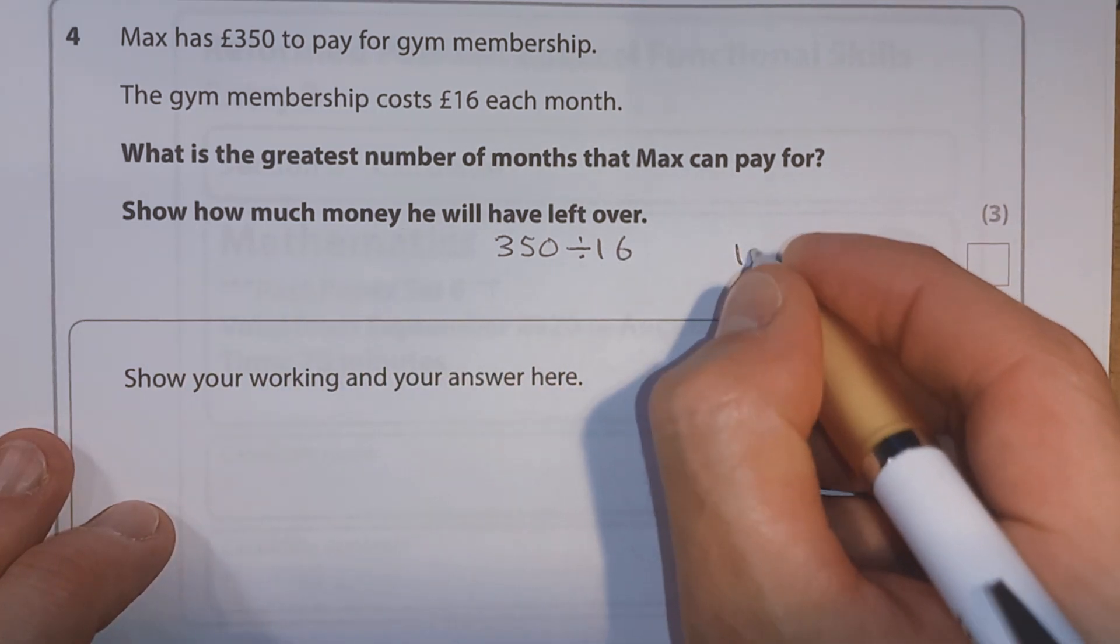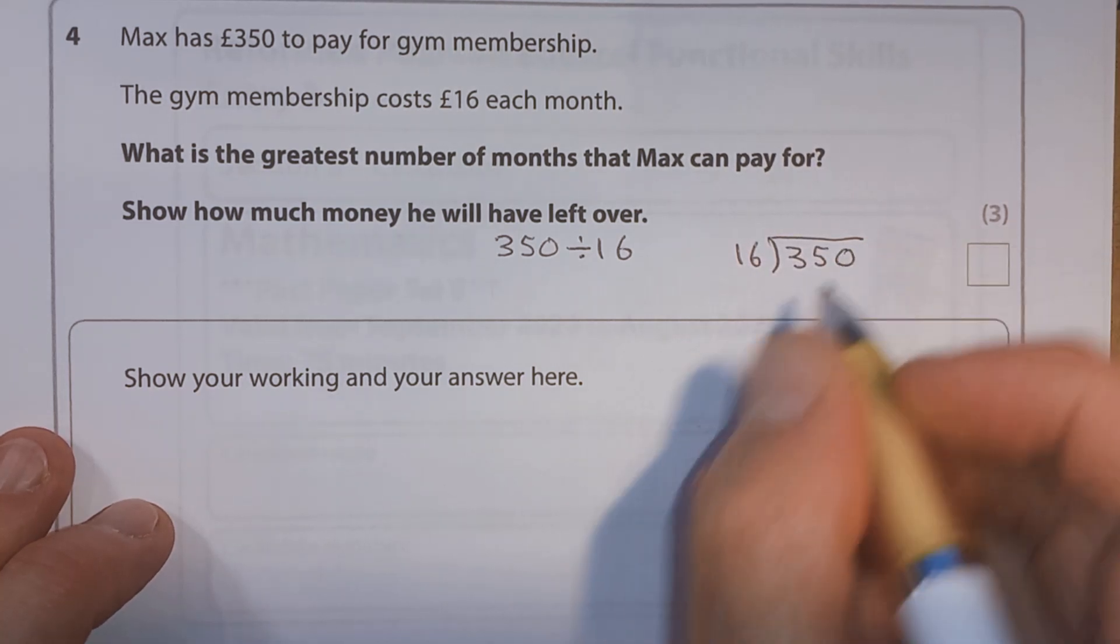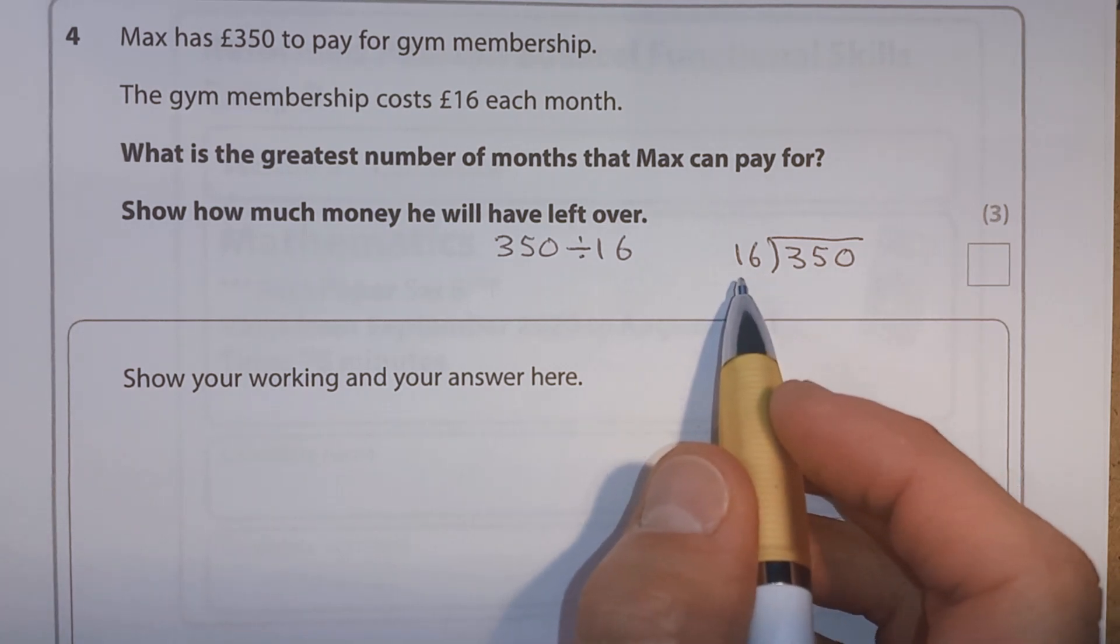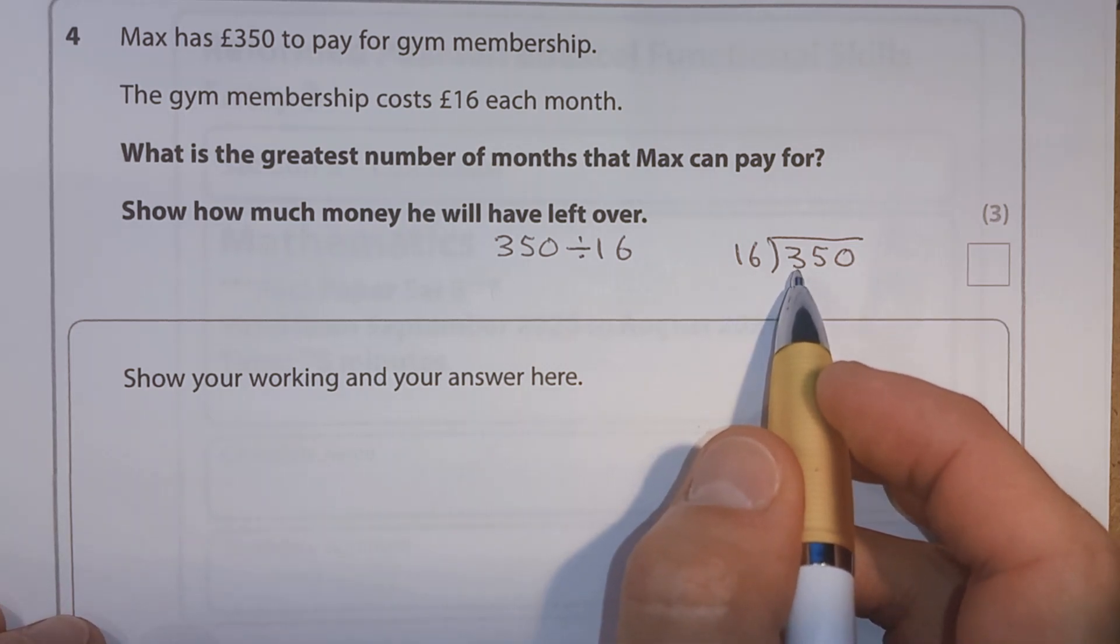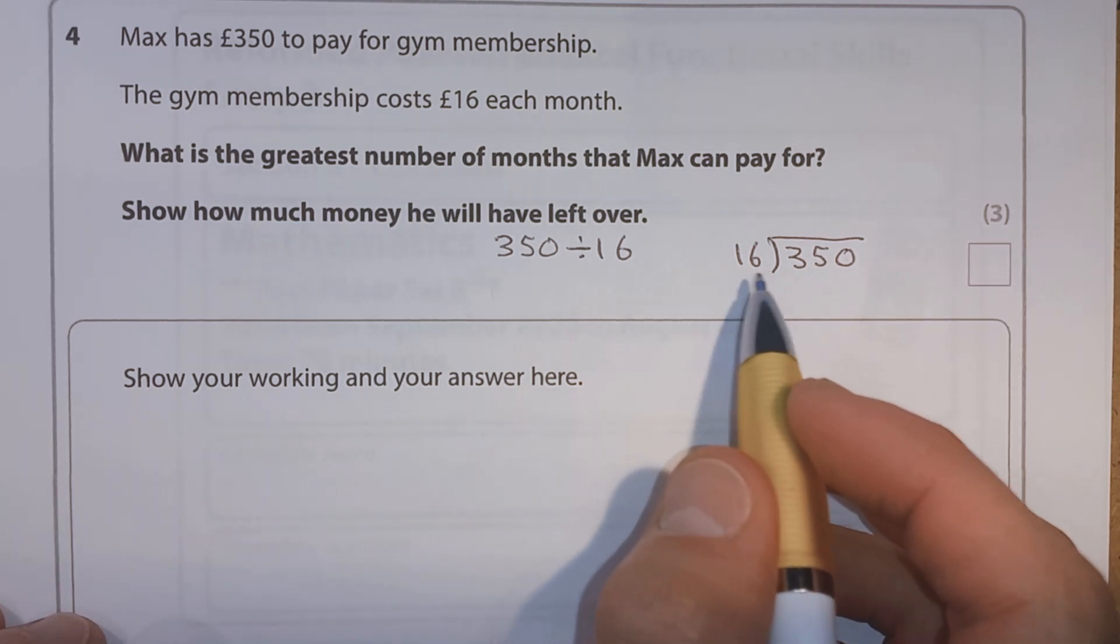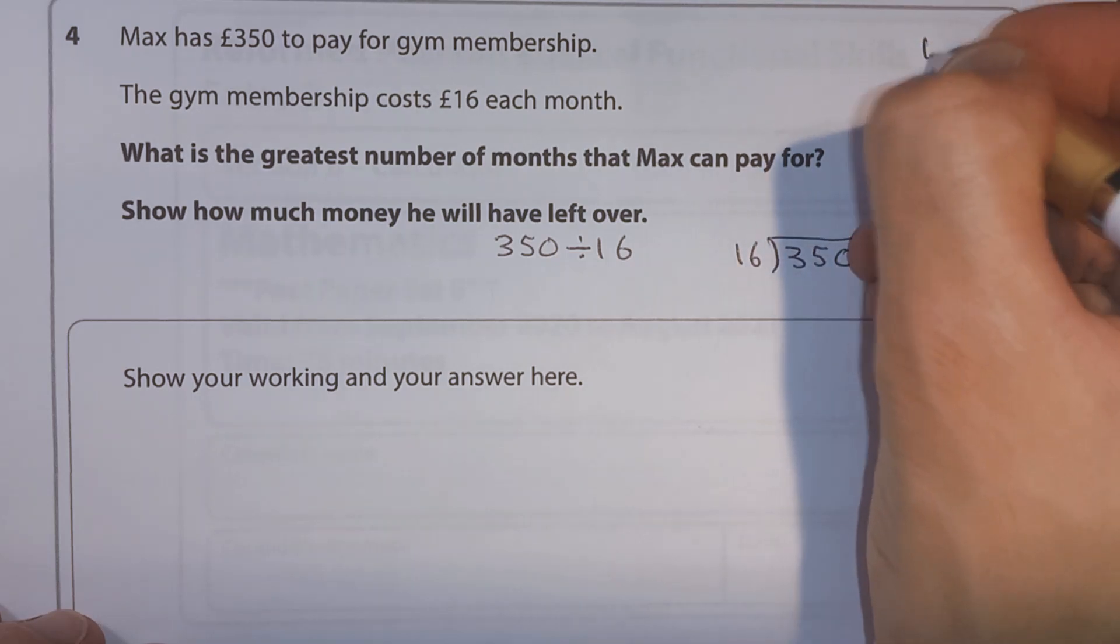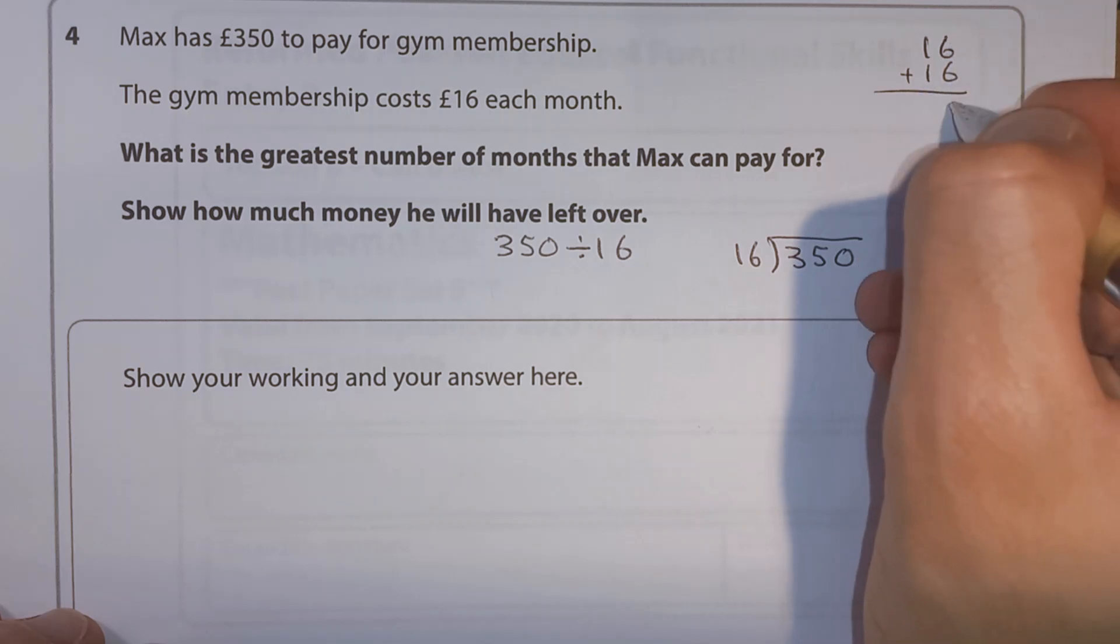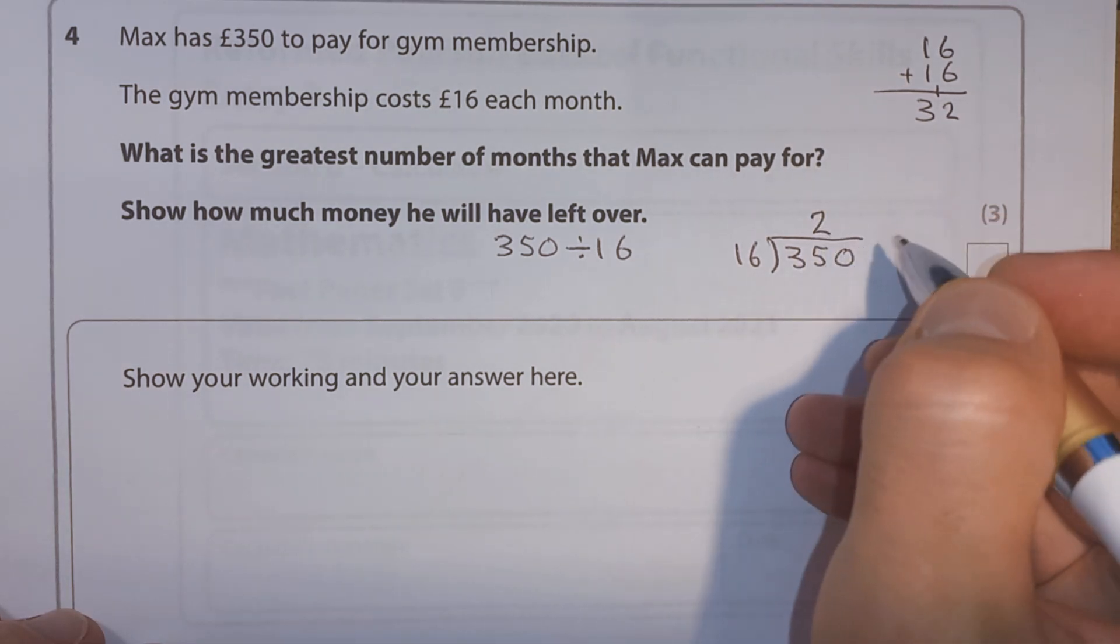Well, we can do this one as a bus stop method. It might seem a little bit different because you've maybe not done it with a two digit number before. But we can still try this. So we can say, well, 16 going into 3? No, because 16 is bigger than 3. But what about 16 into 35? Well, it certainly goes into it at least once. But what about any more times? So let's try 16 plus 16. Let's see what two 16 would be. Well, 6 plus 6 is 12, 1 plus 1 plus 1 is 3. So 16 goes into 35 twice. And how much left over?